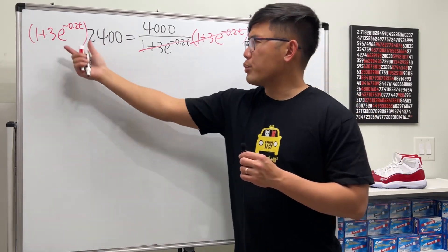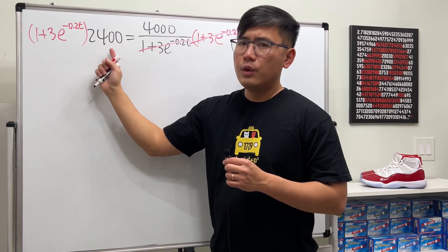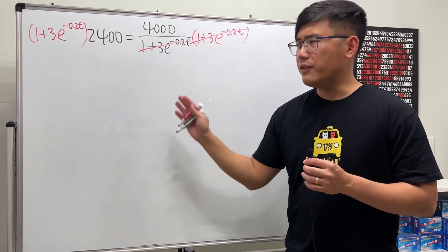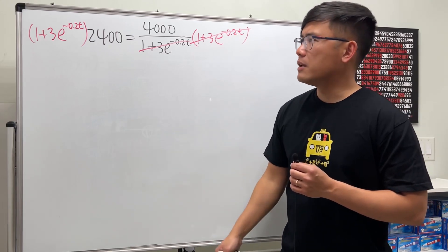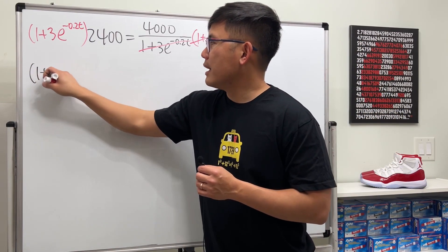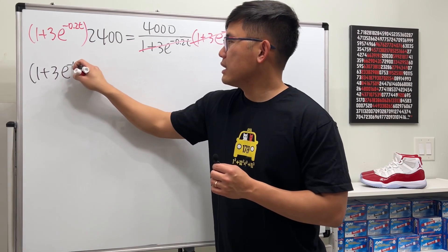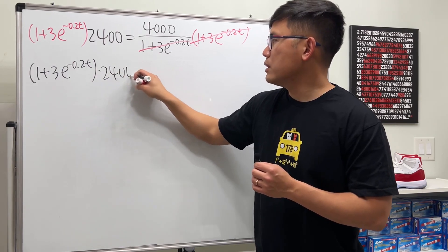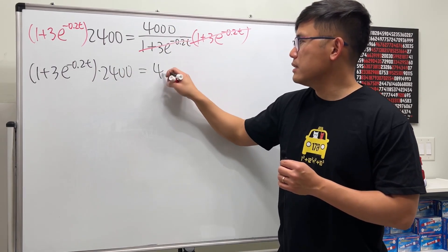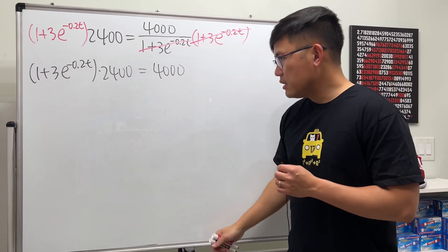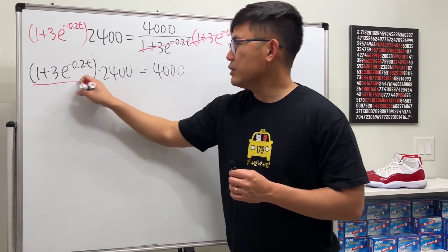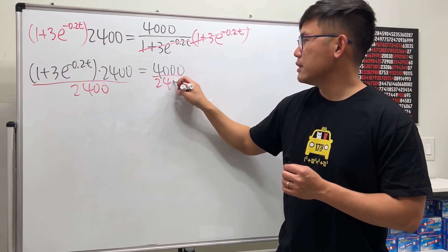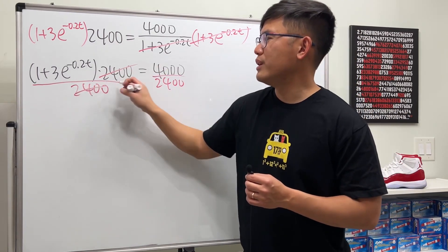Usually when we see a parenthesis with a number in front we just distribute, but for this case don't do that. It will still work if you distribute, but it will be easier if we keep 1 plus 3e to the negative 0.2t multiplied by 2400. This equals 4000. It will be easier if we just divide 2400 on both sides, so you don't have to distribute and then work down later.